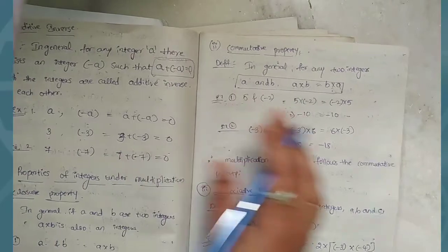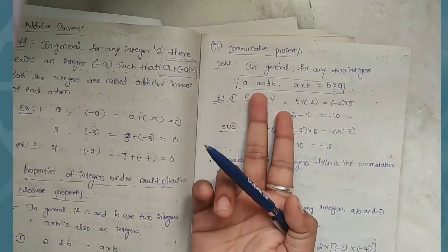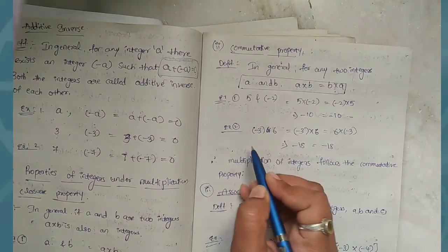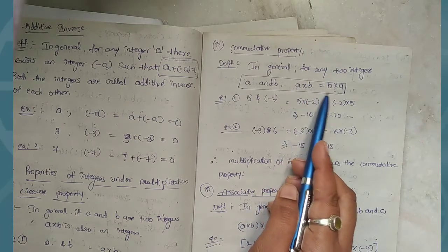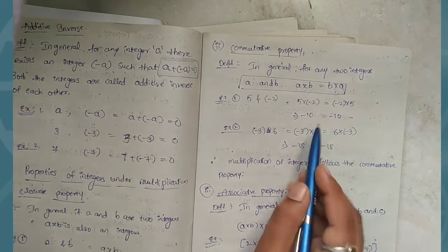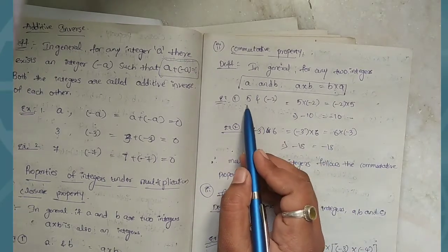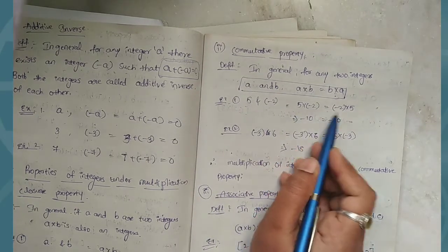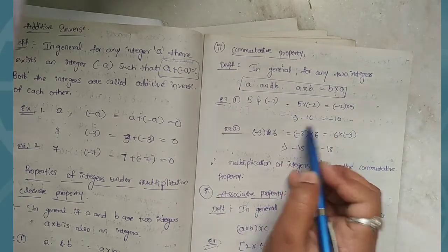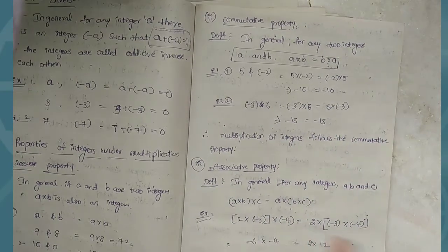Next, commutative property under multiplication. For any two integers, a into b equals b into a. For example, 5 into minus 2 equals minus 2 into 5. This condition is satisfied — commutative property under multiplication is satisfied.